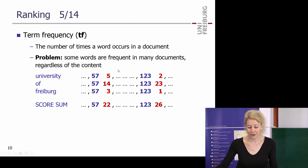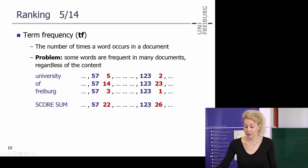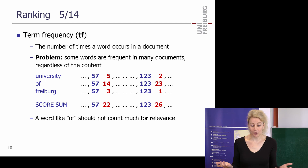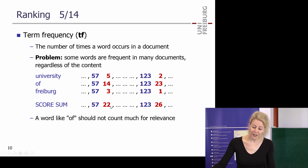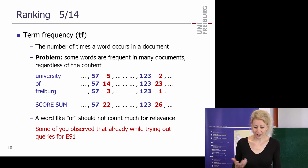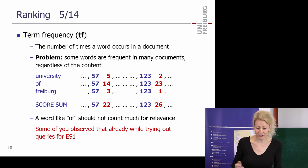If we naively sum term frequencies: 5+14+3=22 for document 57, and 2+23+1=26 for document 123, so 123 would rank higher. But document 57 actually looks like a better hit because the two more important words — university and Freiburg — are mentioned more often there. Many of you observed this: if you entered common words, search results became meaningless — you get results which contain lots of 'and', 'the', 'of', and so on.